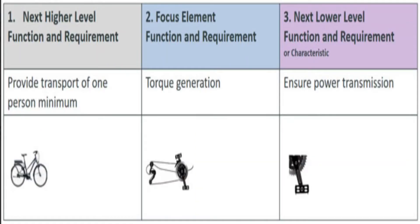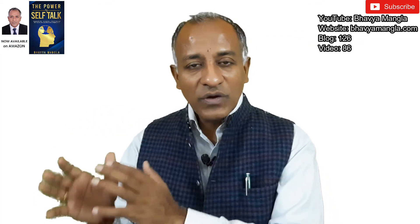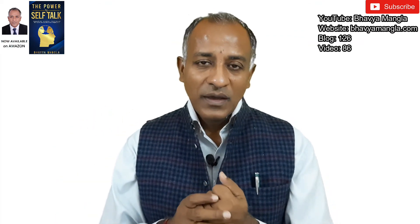If you take the bicycle example, starting from serial number two — the focus element — that is talking about torque generation. If you link it with serial number three, the next lower level, that is talking about power transmission. The overall intent with respect to the higher level, serial number one, is to provide transportation for a minimum of one person. By that we can understand this particular structure a bit more clearly.